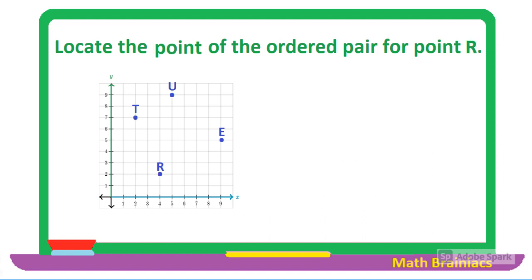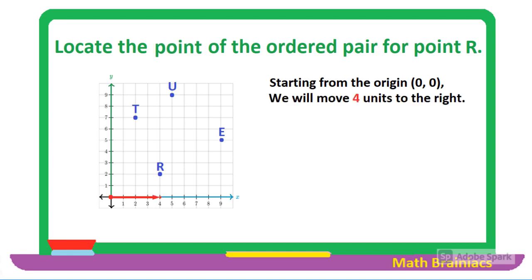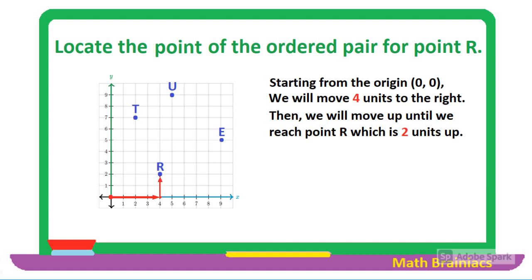Let us work on another example. Locate the point of the ordered pair for point R. Remember that we always start from the origin, which I mark with a red dot. To locate point R, we are going to move four units to the right, then move up two units until we reach point R. Therefore, point R is located at the ordered pair (4, 2).